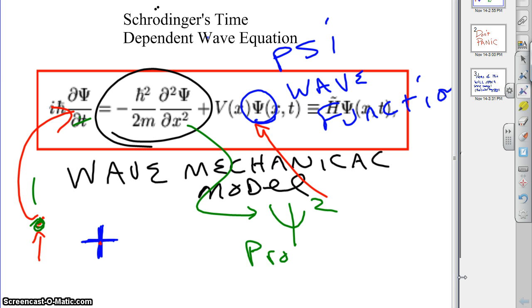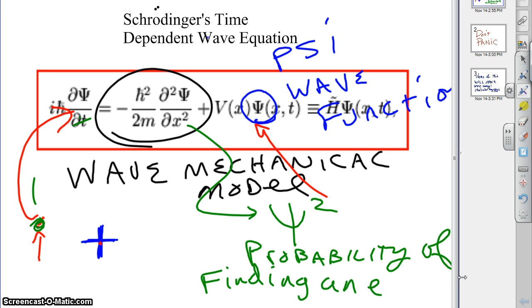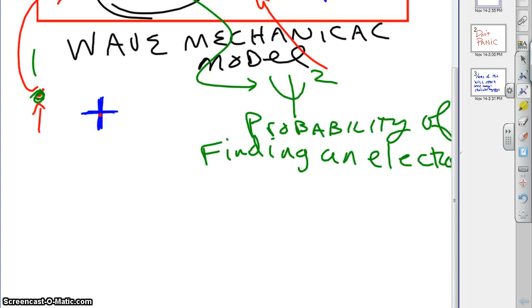Psi squared is the probability of finding an electron at a given point. And that number will have to be somewhere between 0 and 1. A 0 would mean 0%, 1 would mean 100% chance. Obviously you can't have less than a 0% or more than a 100% chance of finding an electron there. So it has to end up somewhere in that range.